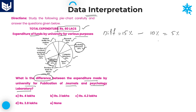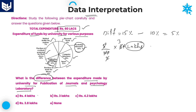What is 5% of the total expenditure of 60 lakhs? Since each option is given in lakhs, we don't need to expand the full value. Cancelling the 10s: 5 × 6 ÷ 10 = 3. Therefore, the required difference is 3 lakhs. Option B is the right answer.